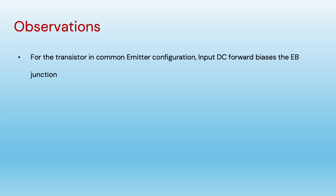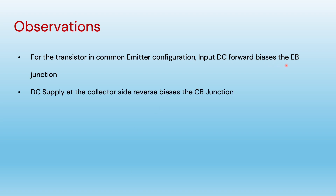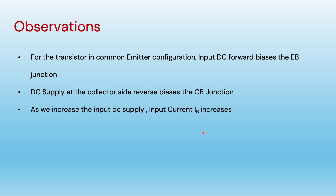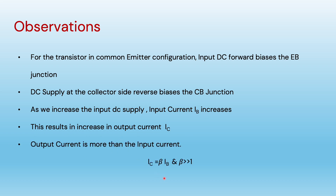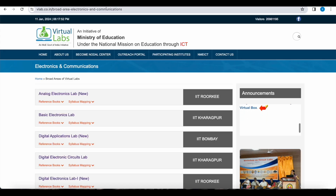In this experiment we observed the common emitter configuration. We forward bias the emitter-base junction using the DC supply, and the output DC supply at the collector side reverse biases the collector-base junction. As we increase the input supply, the input current increases, and this increase in input current results in an increase in output current. Since IC equals beta times IB and beta is much greater than 1, the output collector current is much higher compared to the variation in base current.